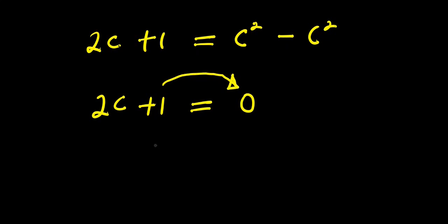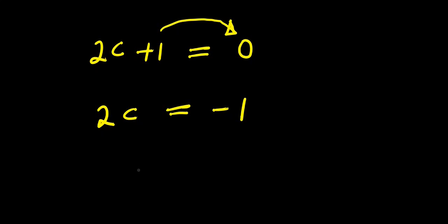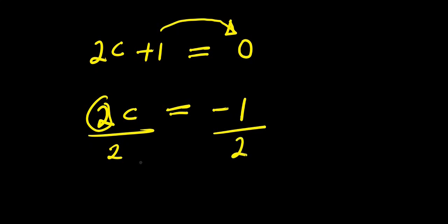We can move the positive one over to the other side — it will change to negative one. So we have 2c equals negative one. We are solving for c, so let's eliminate the coefficient by dividing each part of this equation by two. Two eliminates two, giving us c equals negative one over two.